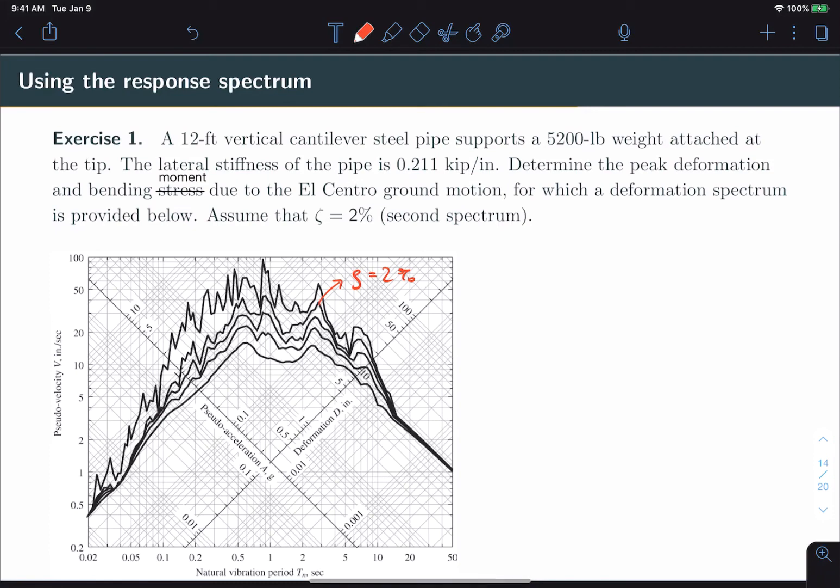All right, so let's start with our structure. We've got our steel pipe. It's cantilevered. It's supporting a mass equal to the weight over gravity. It's got a stiffness of 0.211. And it's got a height, which we'll call h equal to 12 feet. We should write our units as well.